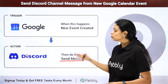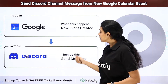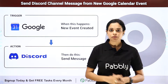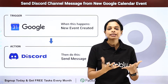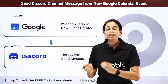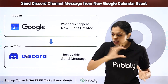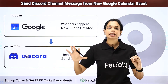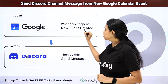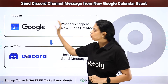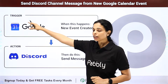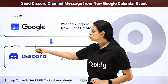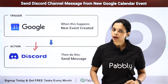Next we have Google Calendar and Discord. Let's say you want to send a Discord channel message from a new Google Calendar event. Any time an event is created on Google Calendar, automatically a message would be sent on Discord that this particular event has been created, making sure that everybody is updated about it. Google Calendar would be your trigger application and Discord would be your action application, and you connect these two by integrating them with the help of Pably Connect software.